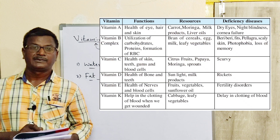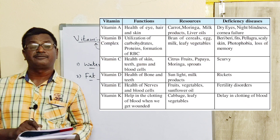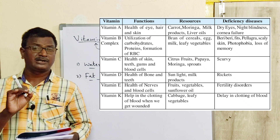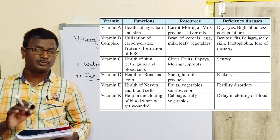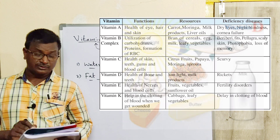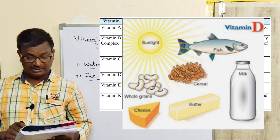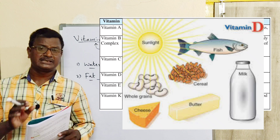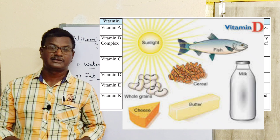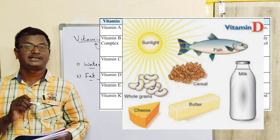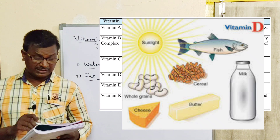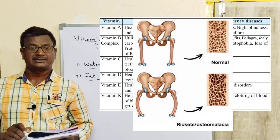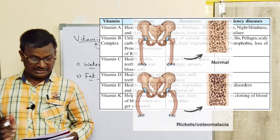Next, vitamin D. Functions: health of bones and teeth — vitamin D is very important for the growth of teeth and bones. Sources: sunlight and milk products. Vitamin D is richly available in sunlight, so it is called the sunlight vitamin. Deficiency of vitamin D causes rickets disease.